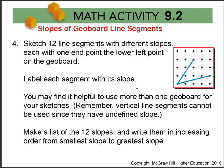And we ask you to sketch all 12 line segments with different slopes and label the slopes. And you will probably find it helpful to use more than one geoboard. Things tend to overlap. And remember, vertical line segments won't be used here since they have undefined slope. And make a list of those 12 slopes and write them in increasing order from smallest to greatest.